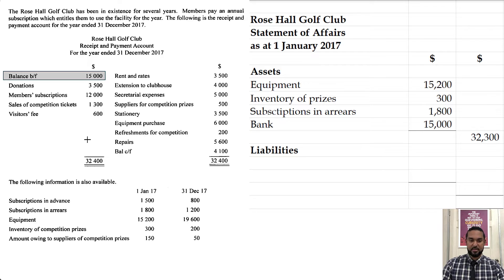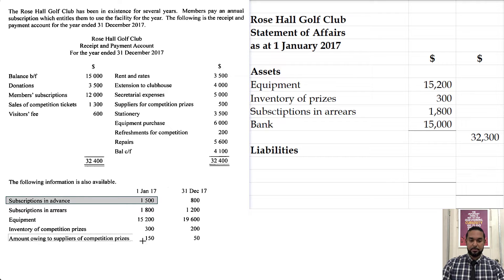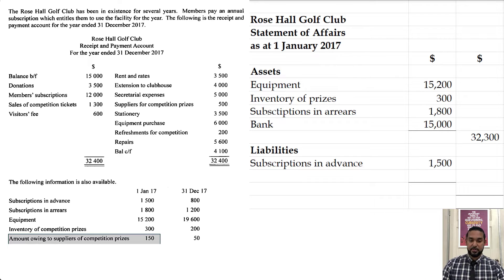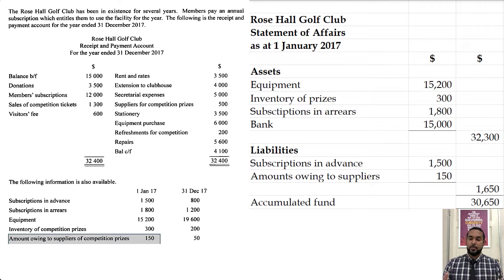So you have four assets totaling $32,300. For liabilities we have subscriptions in advance, $1,500, and the amount owing to suppliers of competition prizes — basically like credit purchases, you're owing people money — totaling $1,650. We subtract that from $32,300 and we get the accumulated fund figure of $30,650.